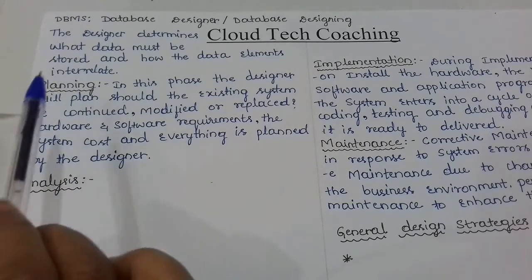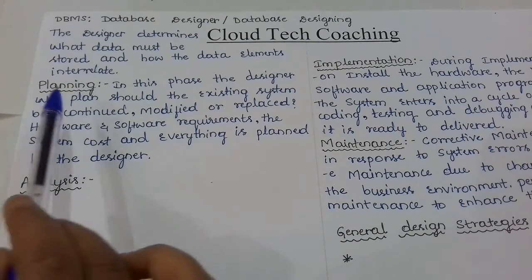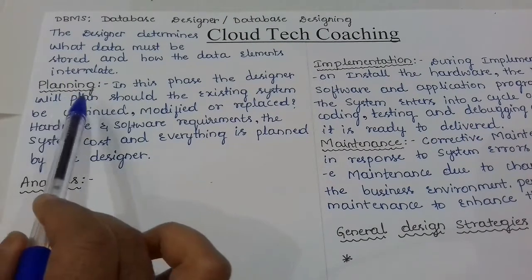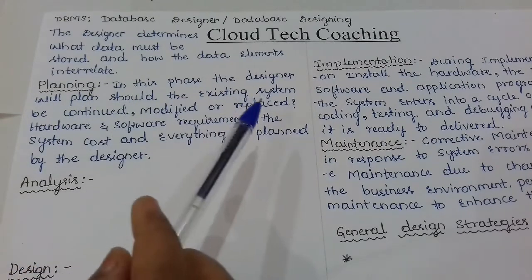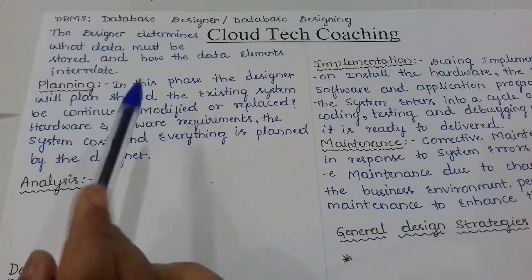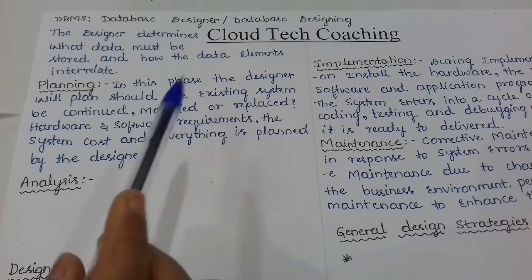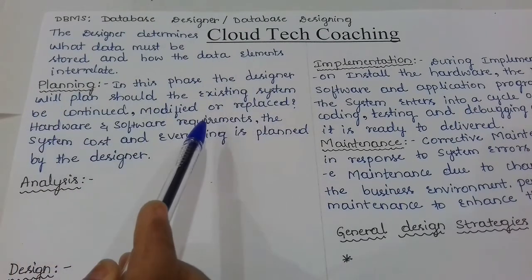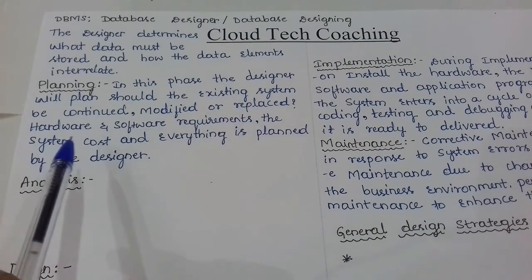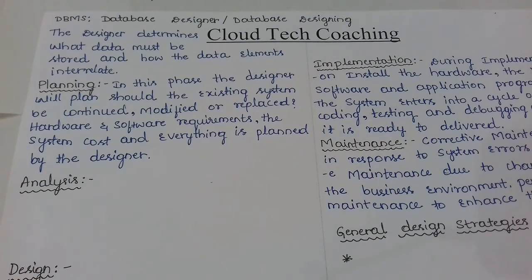We follow several steps during database designing. The first one is the planning phase. In this phase, the designer will plan whether the existing system should be continued, modified, or replaced by a new one. Hardware and software requirements and system cost are all planned by the designer during this planning phase.